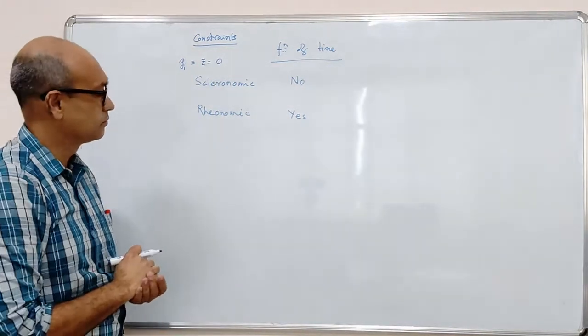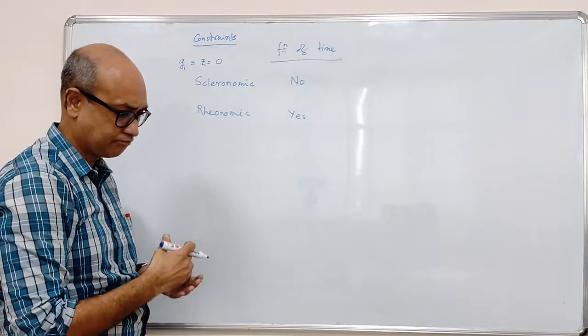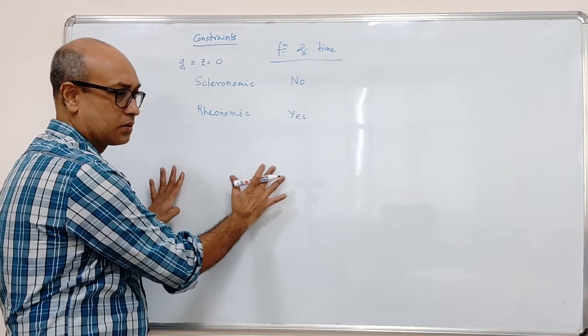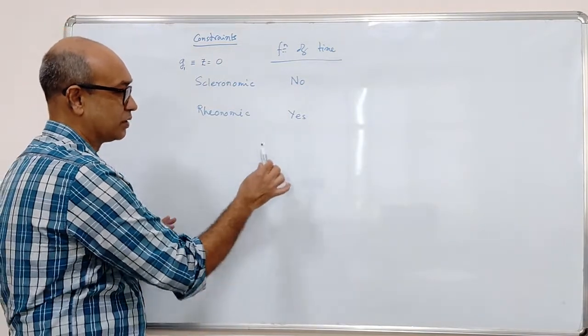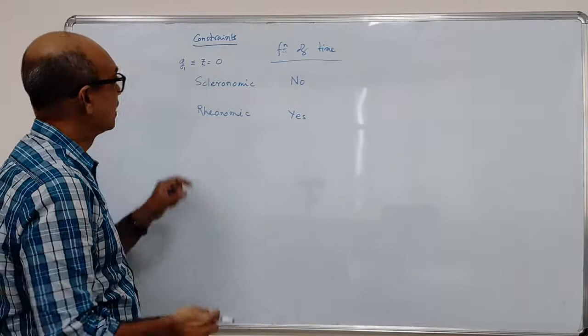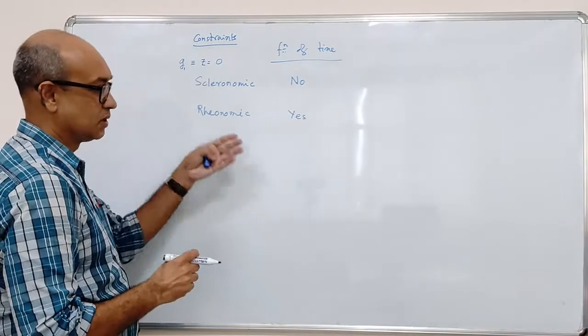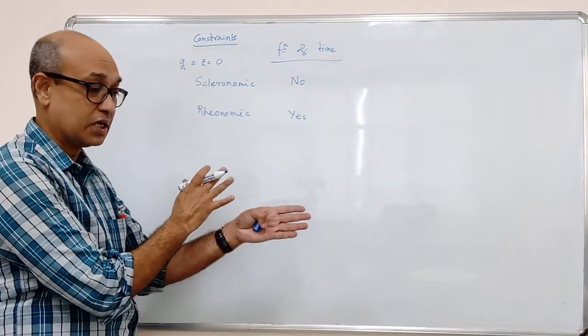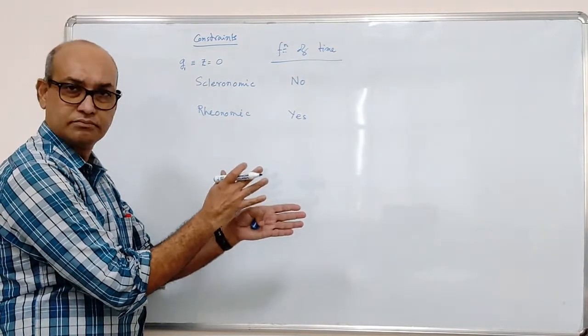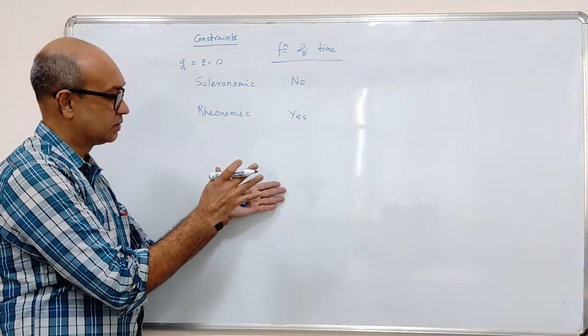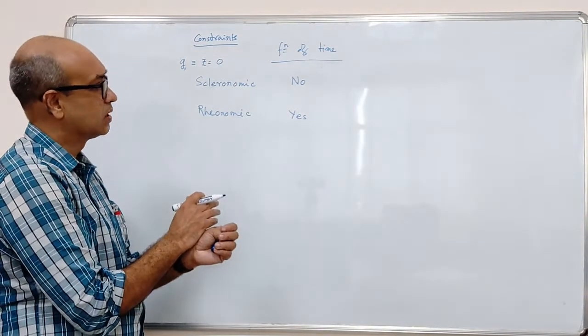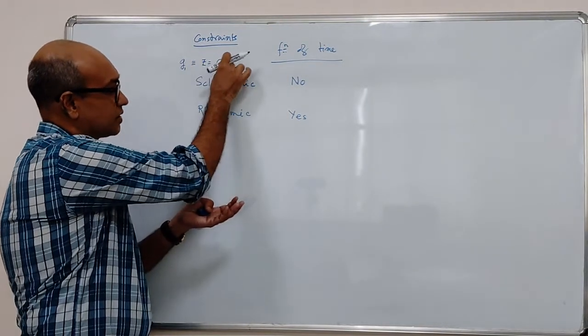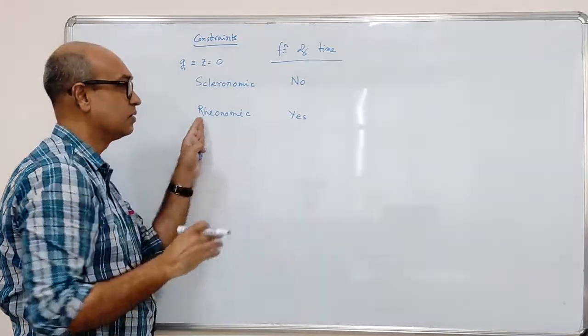An example? The simplest example is assume this board, it starts moving out while I am moving the pin on it. Then there will not be zero all the time. As the board is moving out, and let us suppose somebody else moving the board, he knows he is maintaining some function of time. Then the coordinate is changing as a function of time, and z would be a function of time, and we will call this constraint is rheonomic.